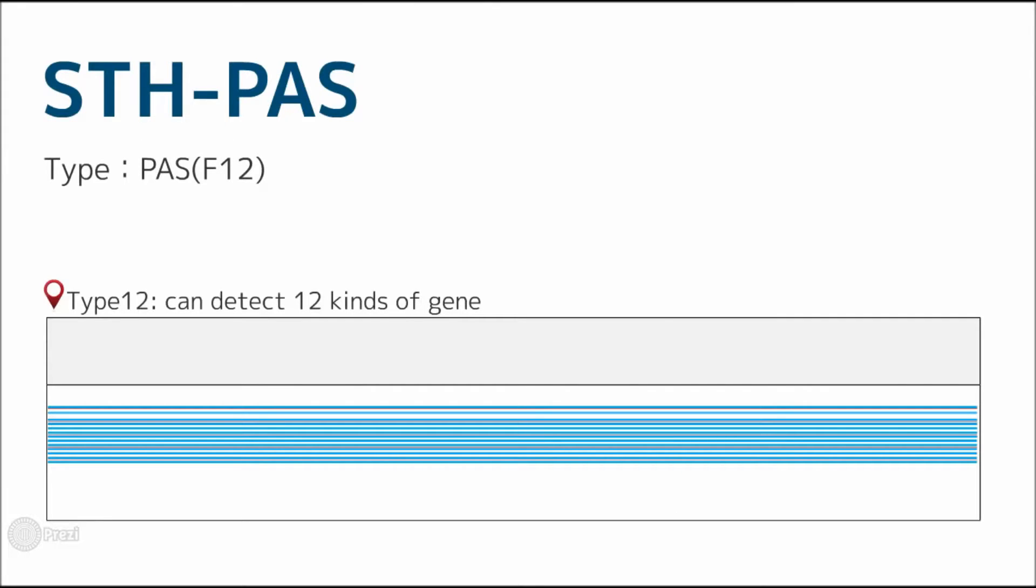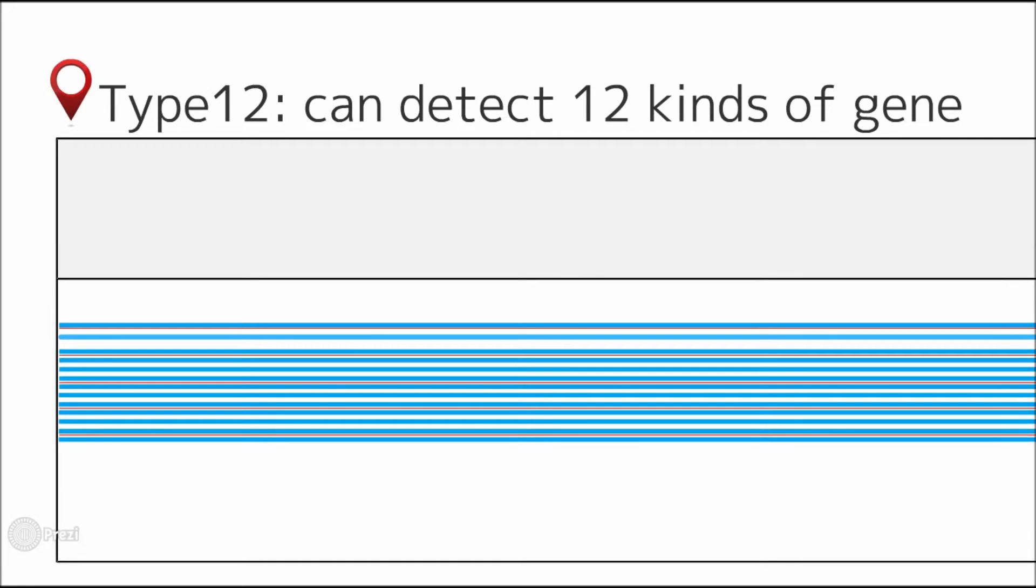This is the kind of pass that can detect 12 types of genes. The printed blue lines represent DNAs that have different sequences from one another.